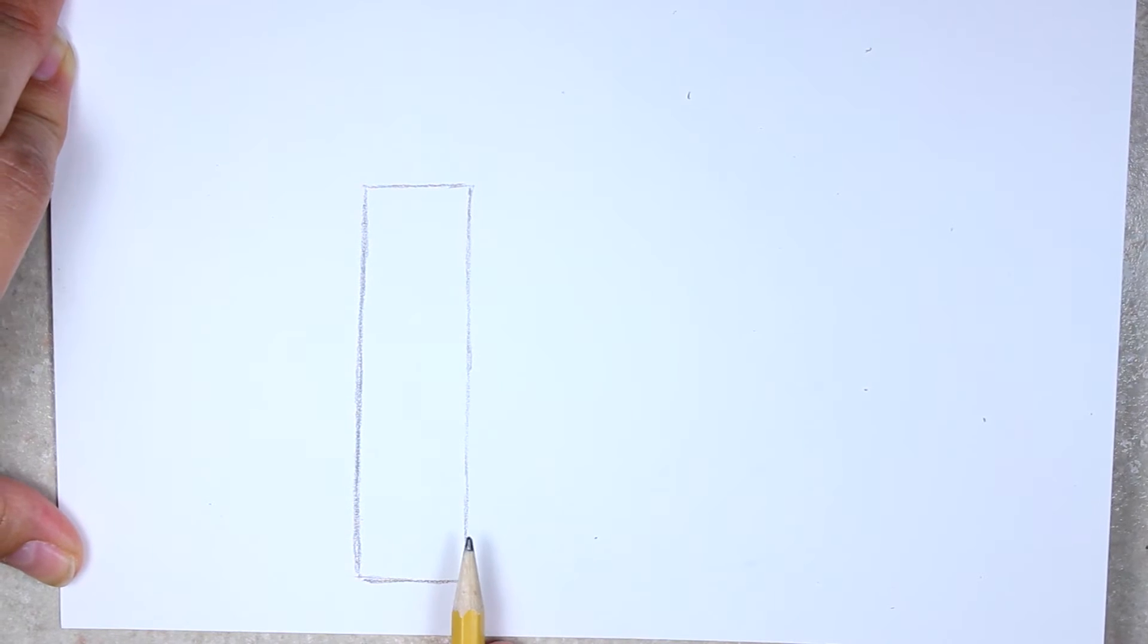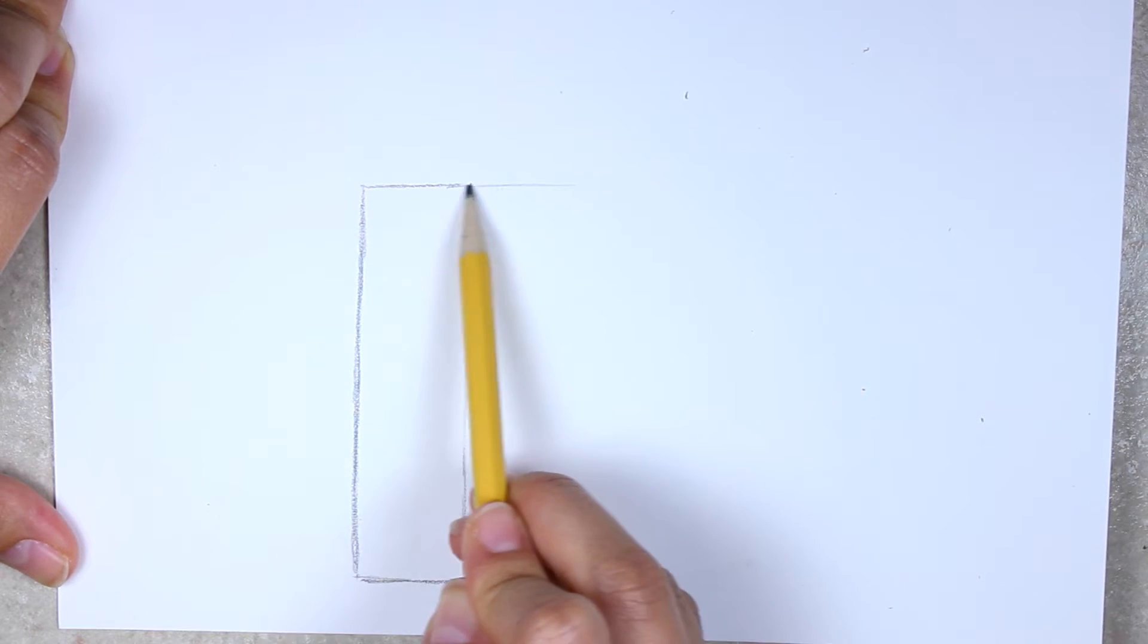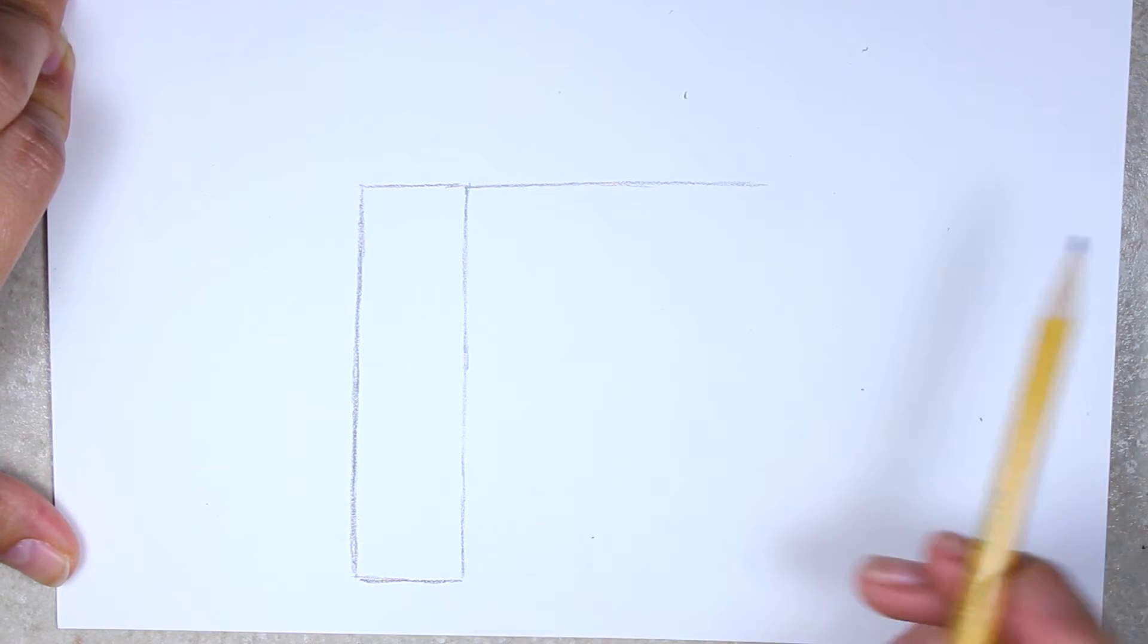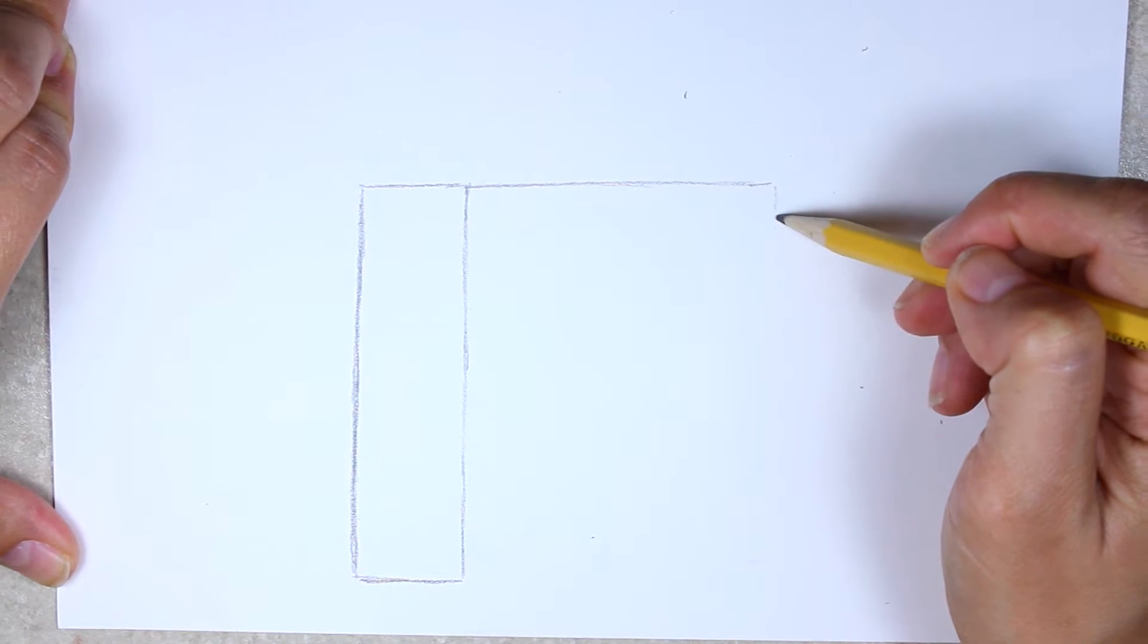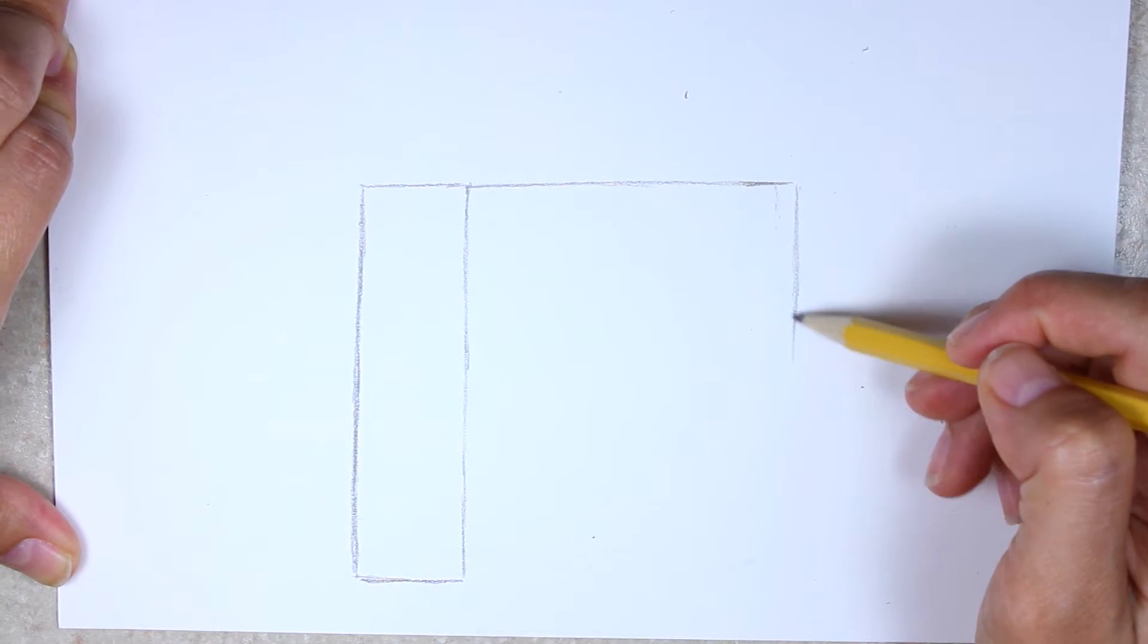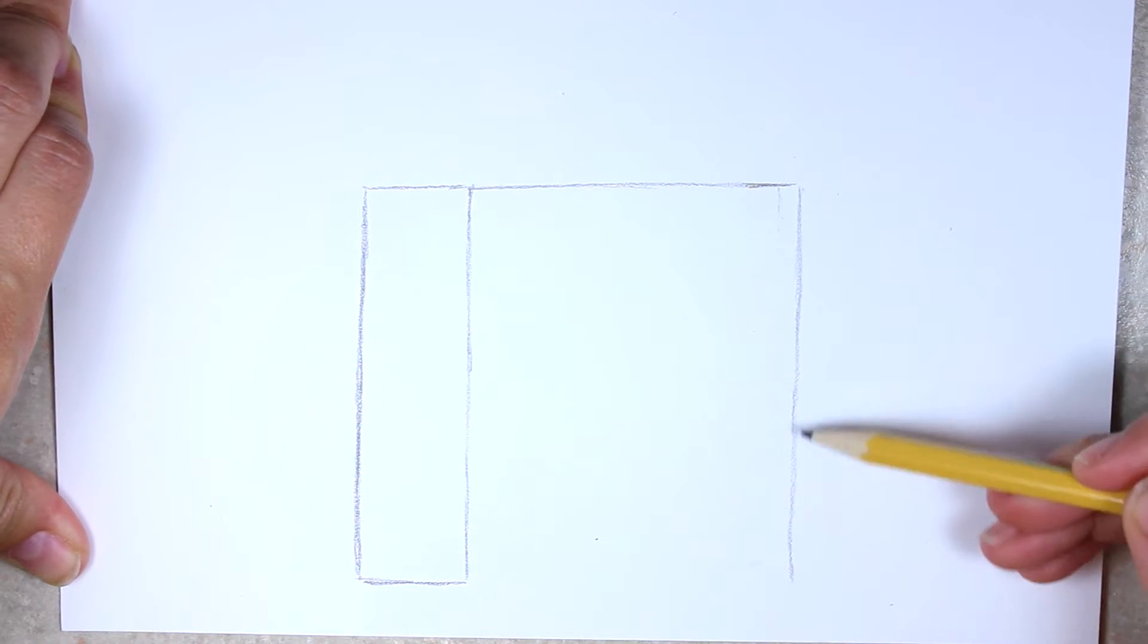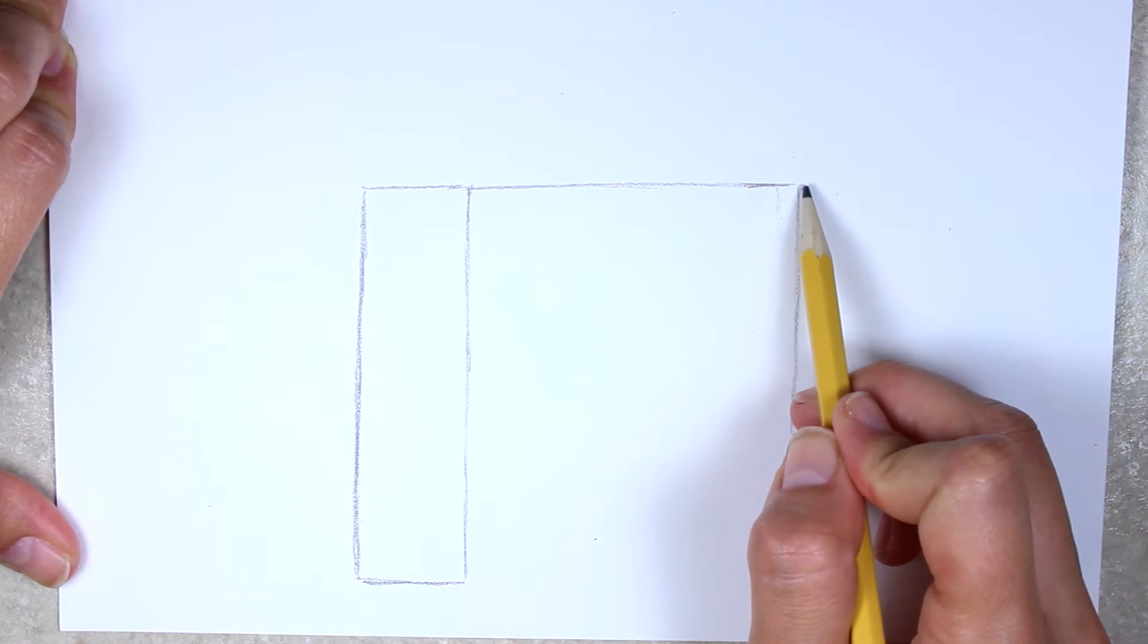The next one is going to be larger but connected to this one. So we're going to make another long line. It's going to be about the width of four of those rectangles that we just drew, so keep going a little wide. Now we're going to come down just like this.